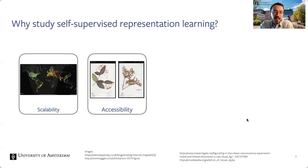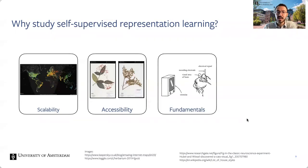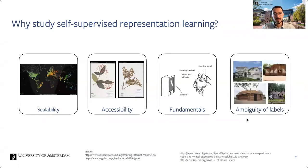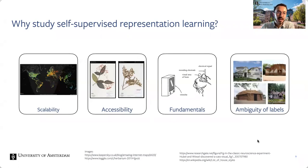A well pre-trained model allows one to use strong computer vision models even when very little labeled data is available, drastically increasing accessibility. Conducting research on what is possible to learn without labels is also a fundamental research effort. Pre-training without labels avoids the ambiguity of labels and, combined with scalability, allows for learning more inclusive and diverse models. With this as our motivation, let us start with my first work.